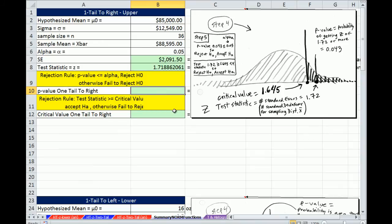Now we can calculate p-value. When we calculate p-value, we compare it directly to alpha. If p-value is less than alpha, then we reject the null hypothesis. So for p-value, we use equals.